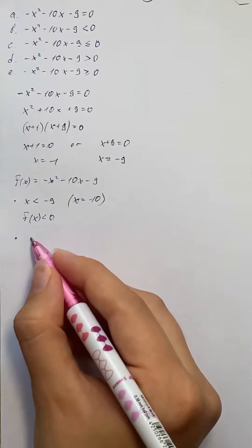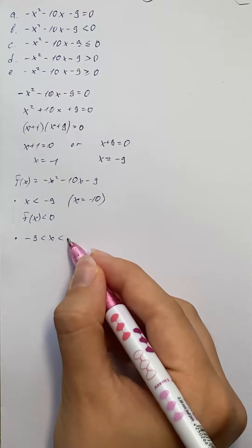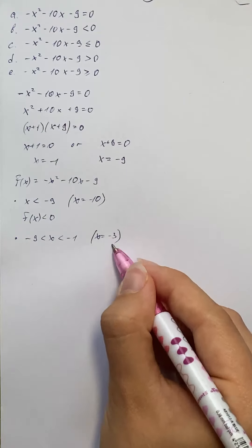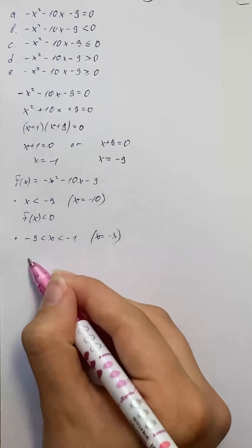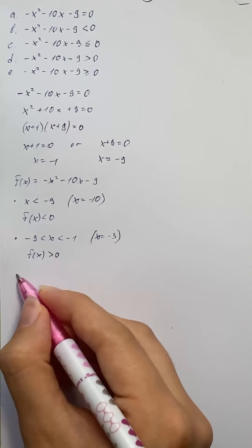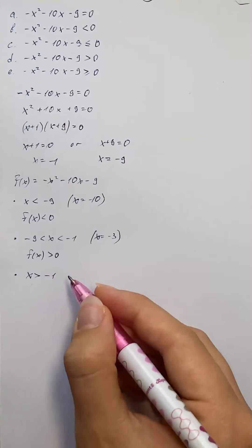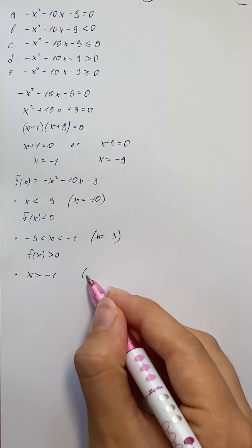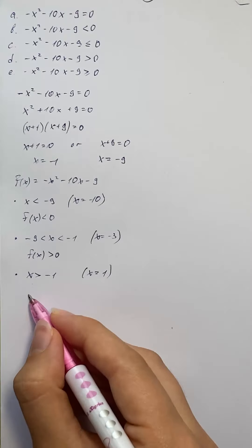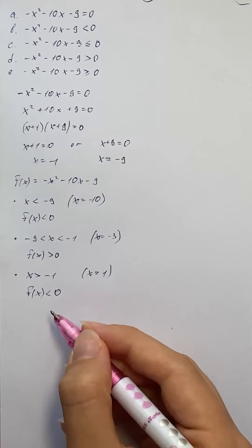The next interval is x greater than negative 9 and less than negative 1. Let x equal negative 3, and we get that our function is positive on this interval. The last interval is x greater than negative 1, and we get that our function is negative on this interval.